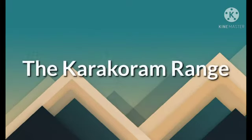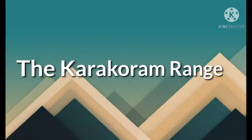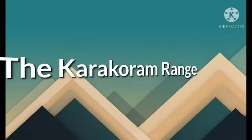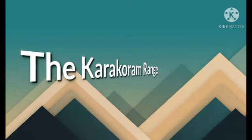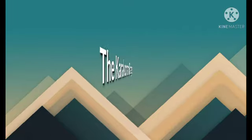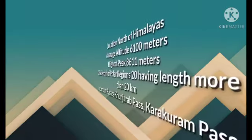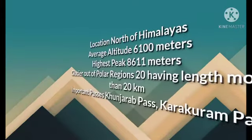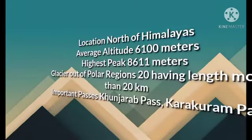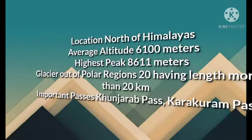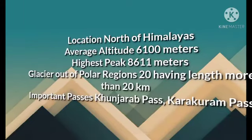After the Central Himalayas, let's talk about the Karakoram Range, which lies in the north of the Central Himalayas. The Karakoram Range is known as host of the highest peaks of the world, including the second highest peak present in Pakistan, known as K2, with a height of 8,611 meters. The average altitude of the Karakoram is 6,100 meters, slightly higher than the Central Himalayas.